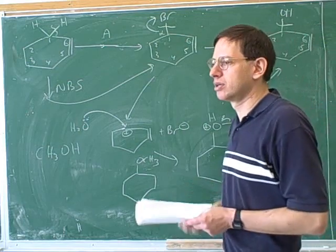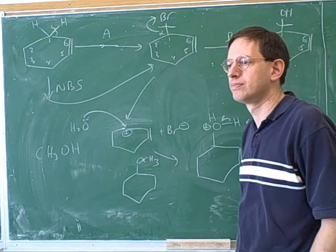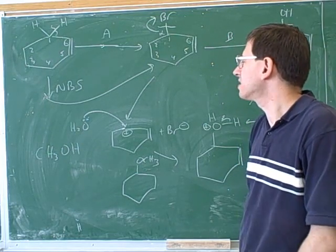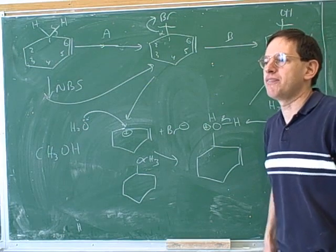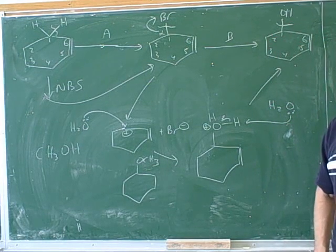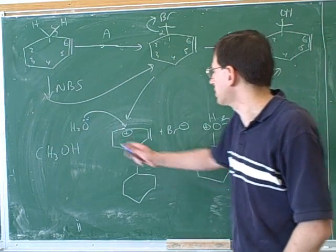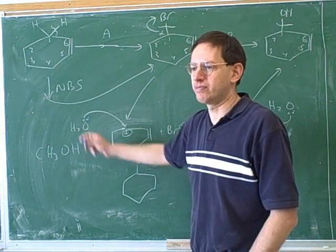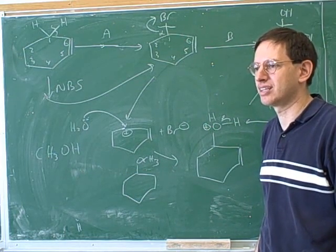So you pretty much always have an SN1 then if you've got that pi bond next to it? Not necessarily. That's a nice try. But if you had a good enough nucleophile, if you have a really good nucleophile or base, it's still not going to wait for the leaving group to leave. But in this case, we had a weak nucleophile that was going to wait around until the leaving group left. So it's not going to stabilize it enough to override a good nucleophile.